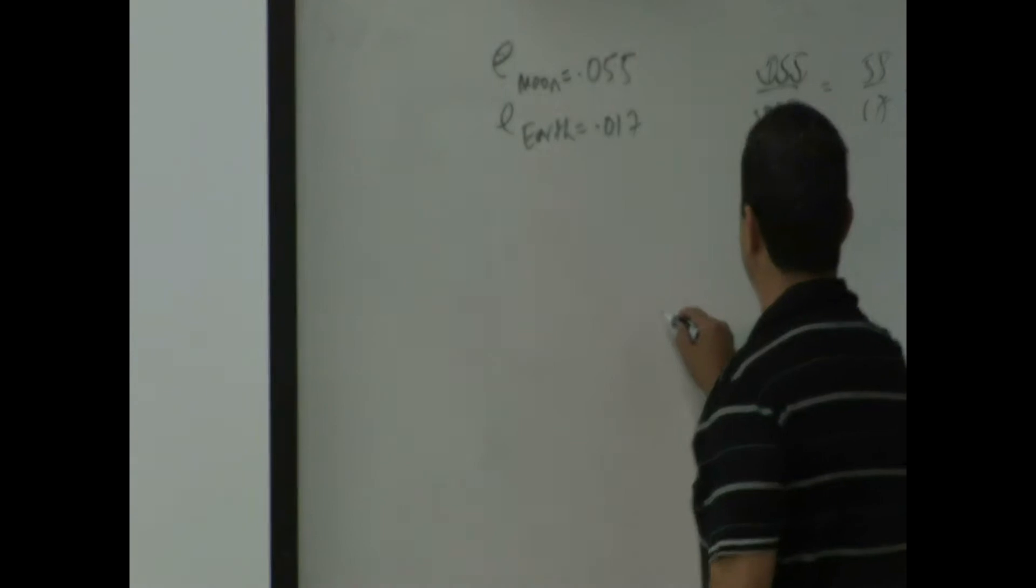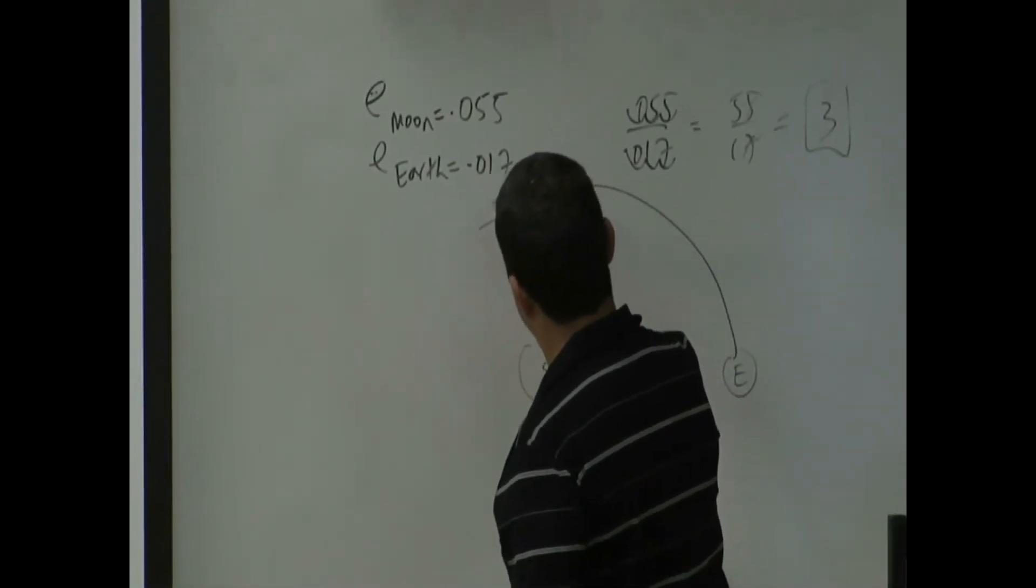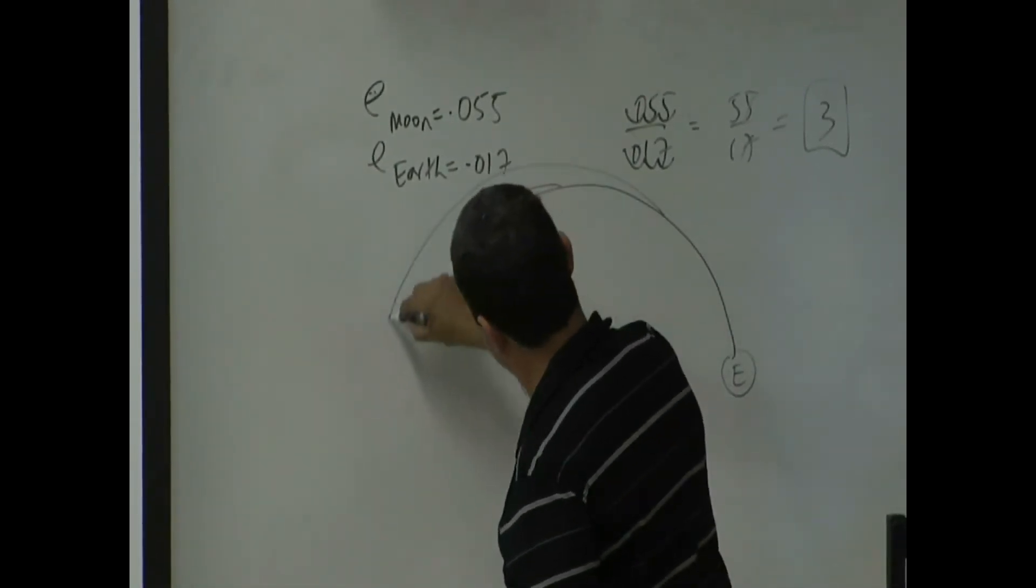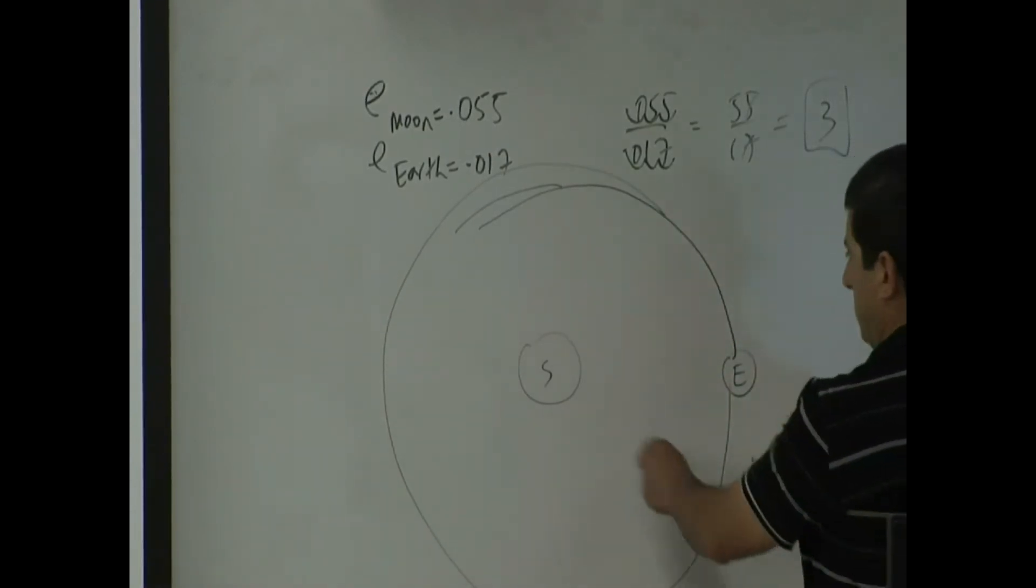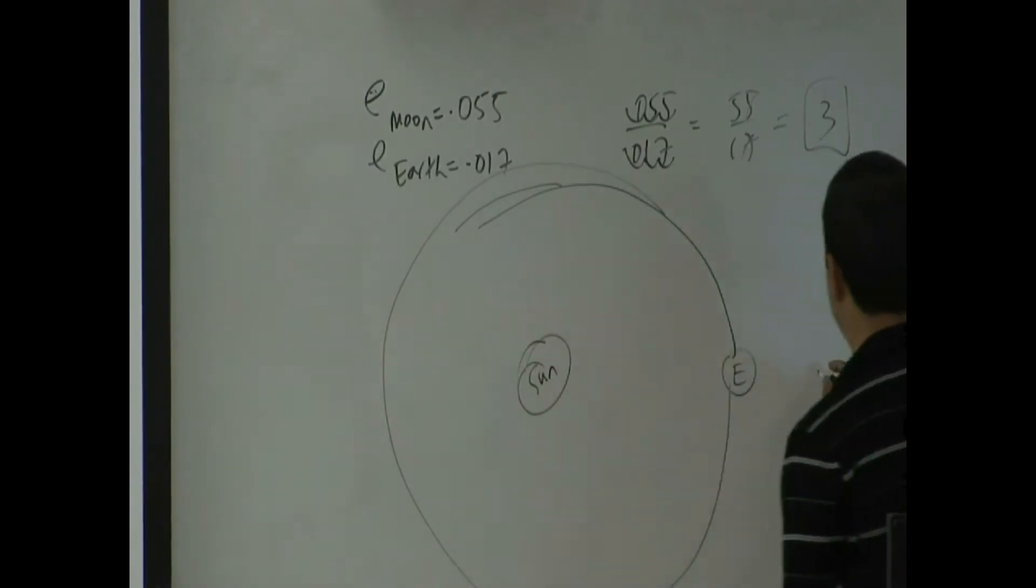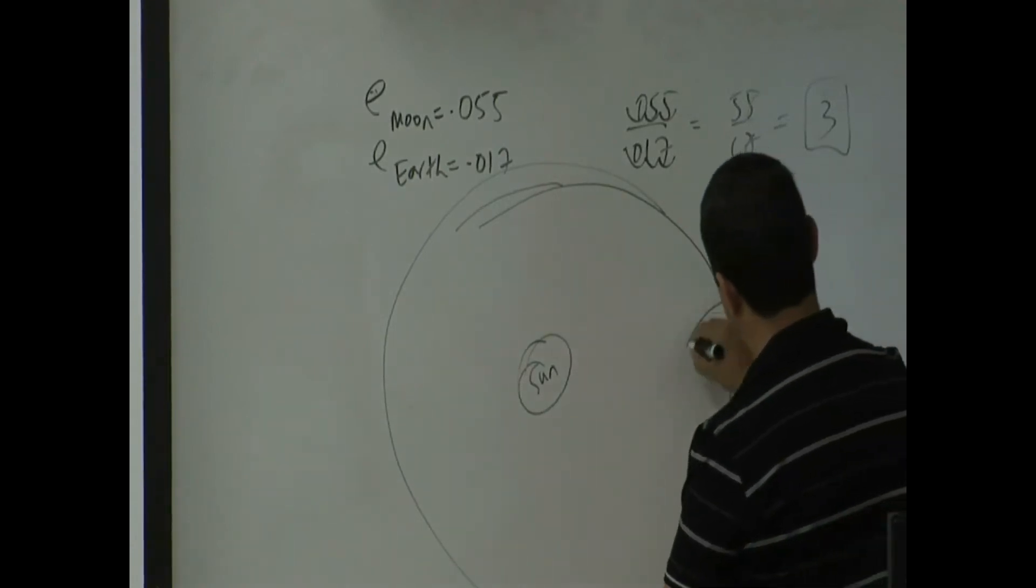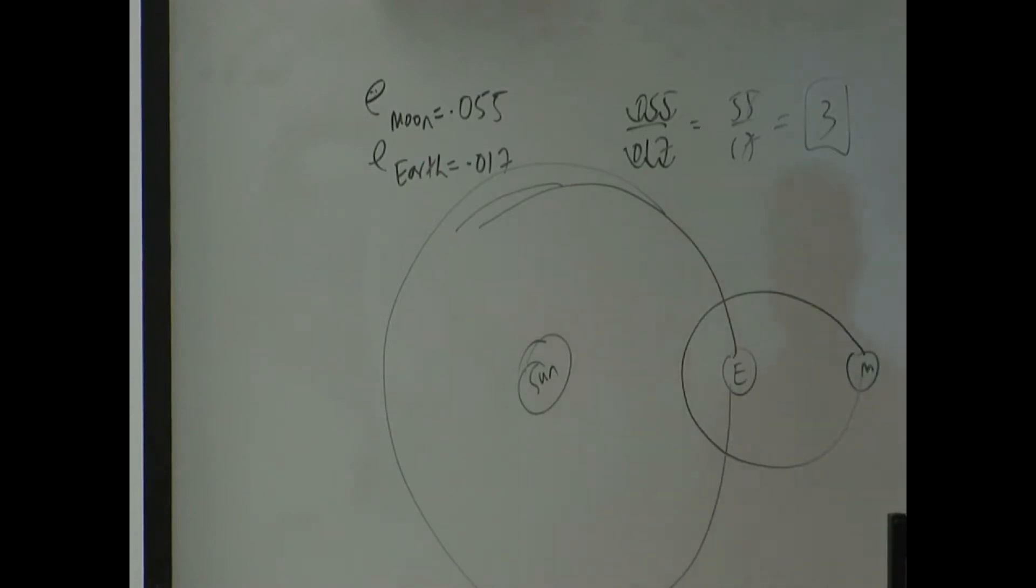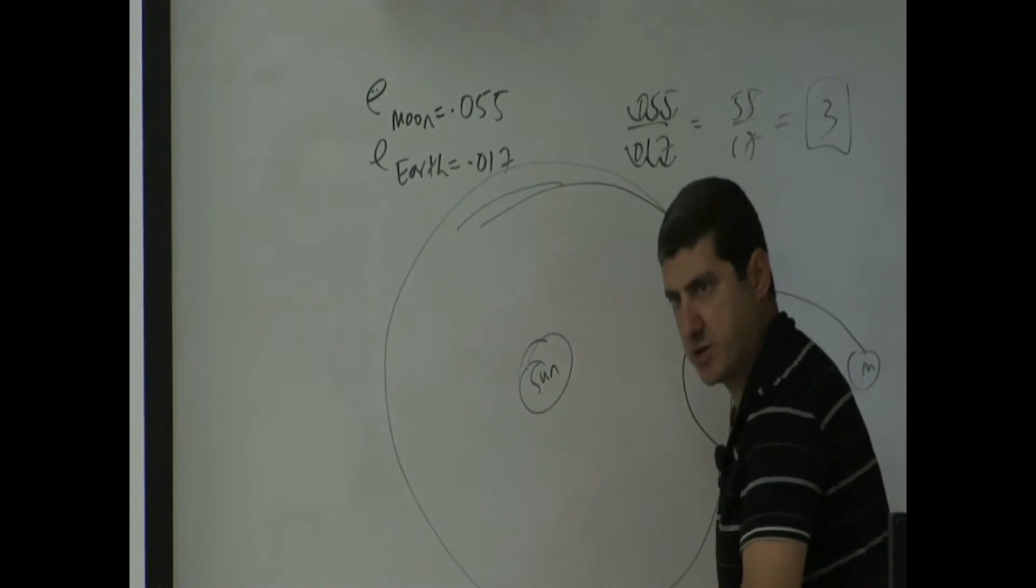So if the sun is here, if the Earth's orbit looks like this, I'm just going to exaggerate. See how it's elliptical? The moon's orbit is even more elliptical, three times more elliptical. So I'm just going to exaggerate. Something like that. It's more obviously elliptical than Earth's orbit is elliptical.